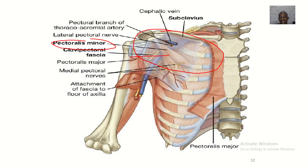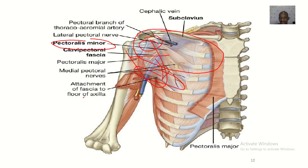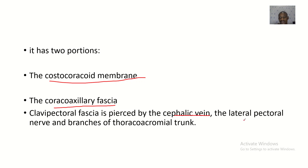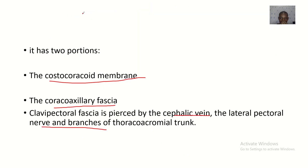The second portion is the coracoaxillary fascia, which extends from the coracoid process to the axillary fascia. The clavipectoral fascia is pierced by the cephalic vein, the lateral pectoral nerve, and branches of the thoracoacromial trunk.